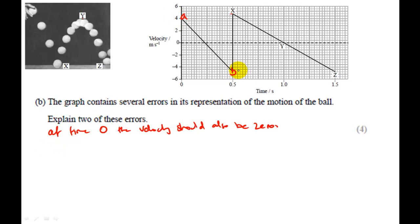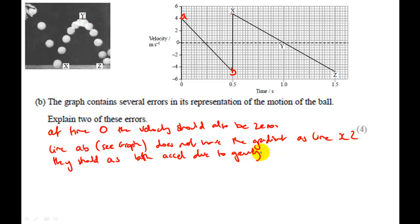So if I maybe label this line AB, I can say line AB on graph does not have the same gradient as line XZ. They should, as both accelerate due to gravity. You can see from my handwriting that I really wouldn't make a very good English teacher.